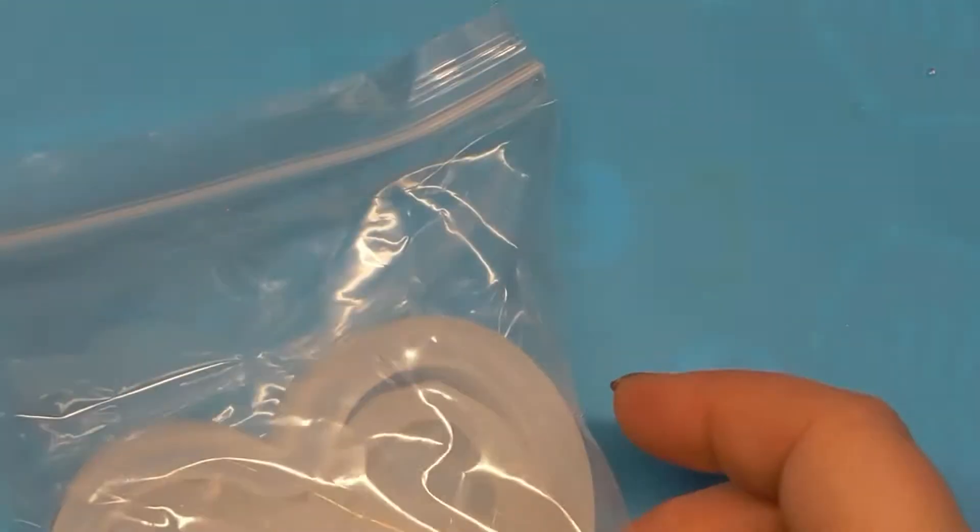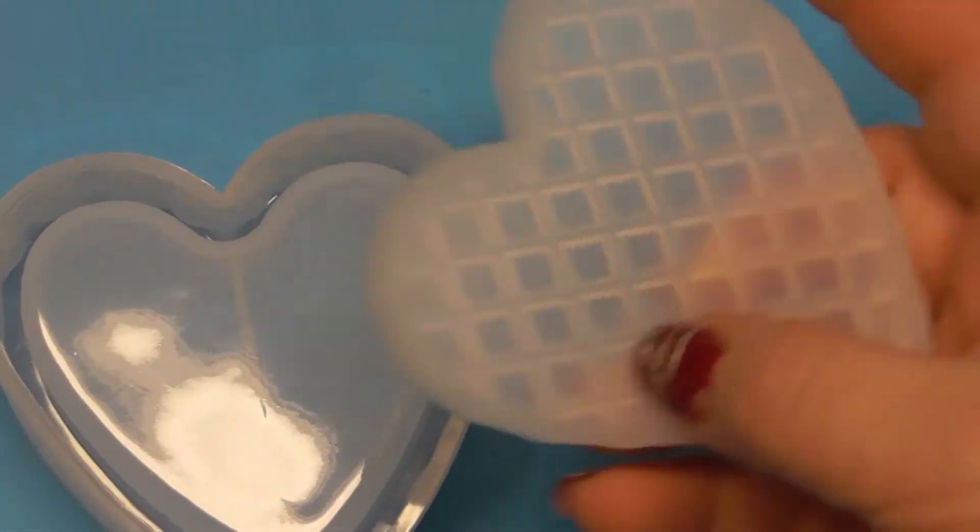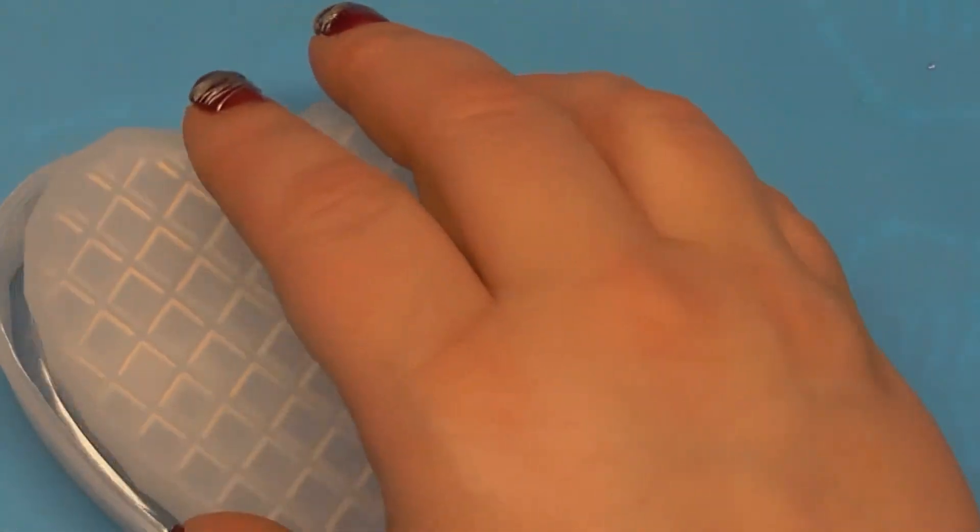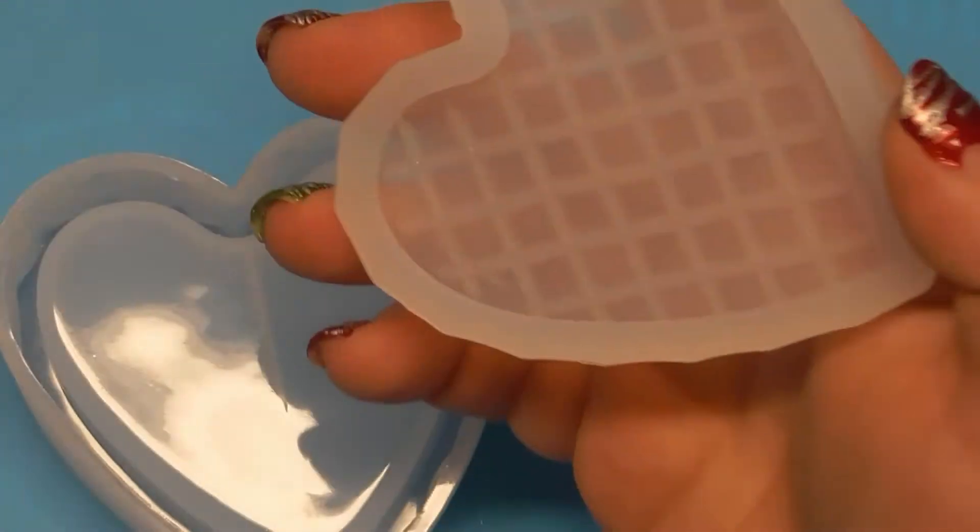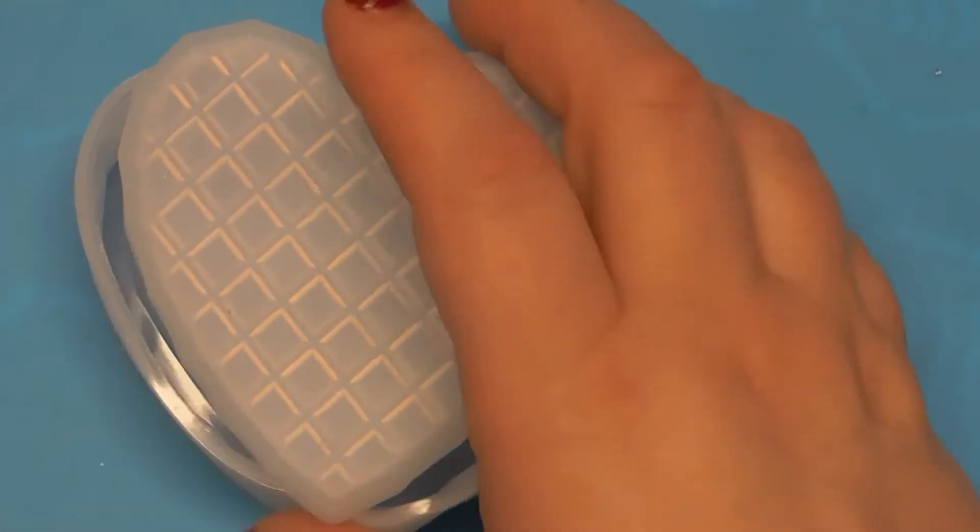And I got this little trinket tray. Well, trinket box trinket tray. There's a lid for that. But I got this and it's kind of got that pattern. And then this would be the lid. Hopefully the lid would fit. So it was that one.